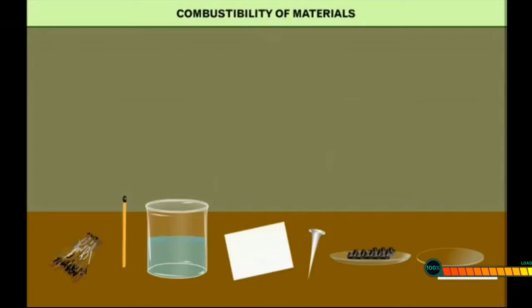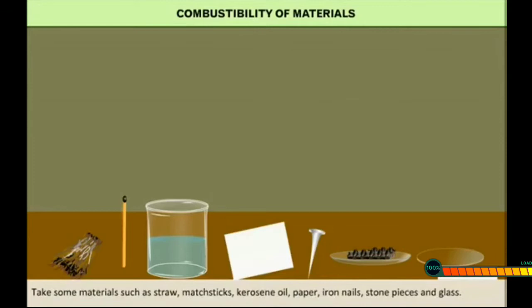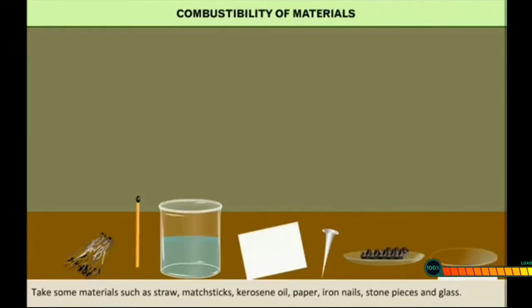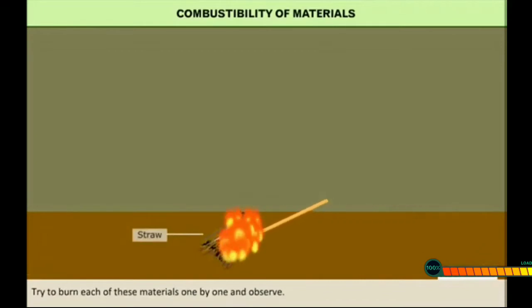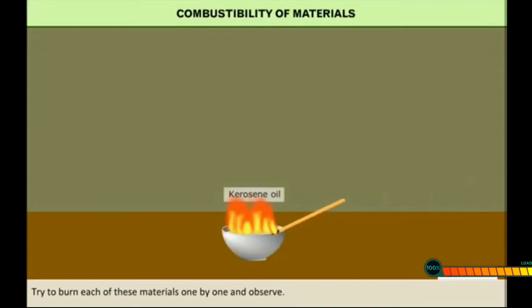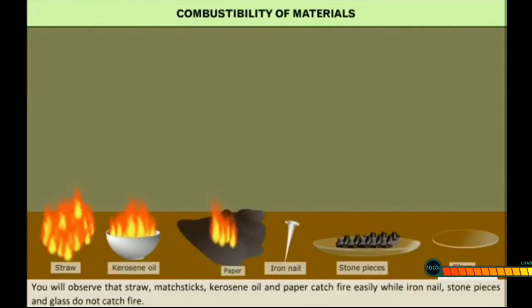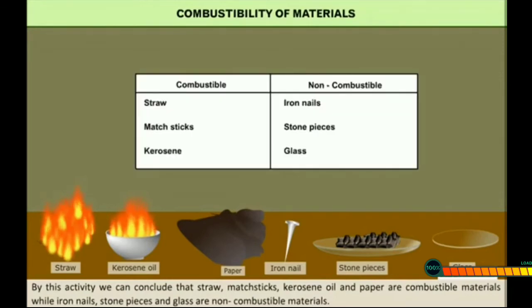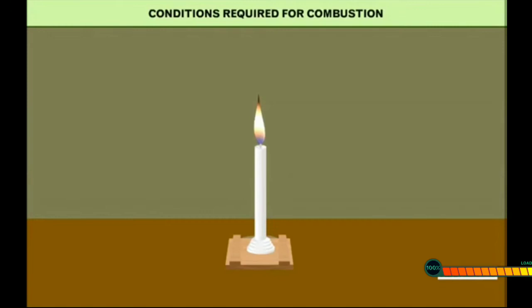Now let us perform an activity to demonstrate the combustibility and non-combustibility of some materials. Take materials such as straw, matchstick, kerosene oil, pepper, iron nail, stone piece, and glass. Try to burn each of these one by one and observe. You will observe that the straw, matchstick, kerosene oil, and pepper catch fire easily, while iron nails, stone, and glass do not catch fire. We can conclude that straw, kerosene oil, matchstick, and paper are combustible materials, while iron nails, stone pieces, and glass are non-combustible materials.